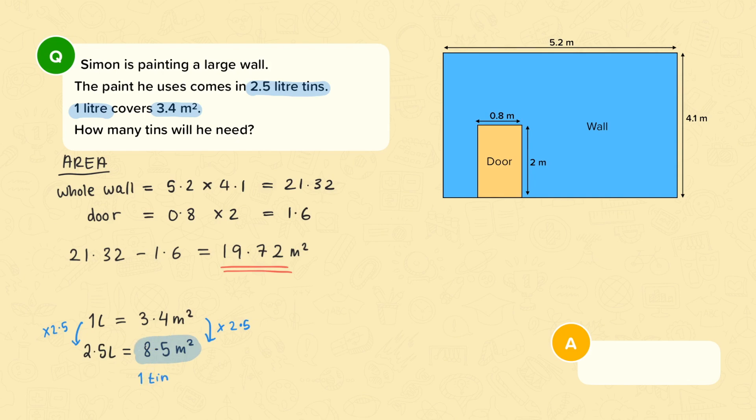So now we know that the area to cover is 19.72 meters squared. We know that each tin covers 8.5 meters squared. So now the final thing to do is work out how many tins we need. So we'll do 19.72 divided by 8.5. So that gives me an answer of 2.32. Now here's the bit where we have to relate it back to real life. In real life if you needed 2.32 tins of paint you'd have to buy three because you can only buy a whole number of tins. So the final answer is that he needs three tins.